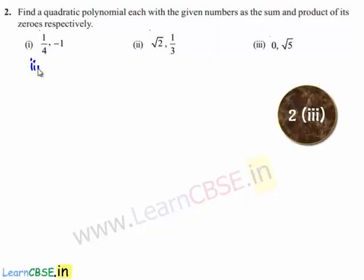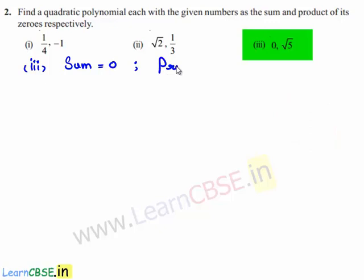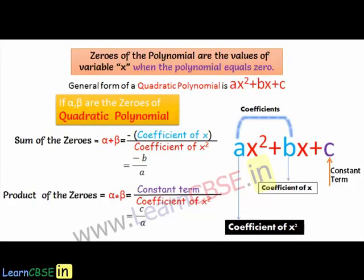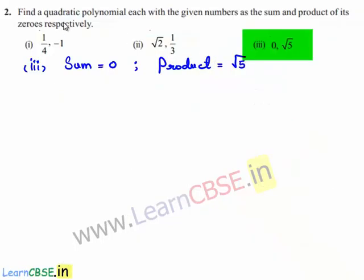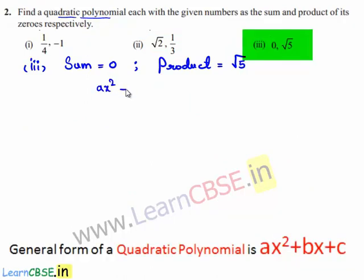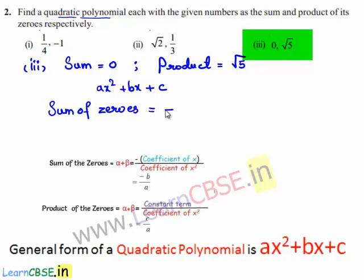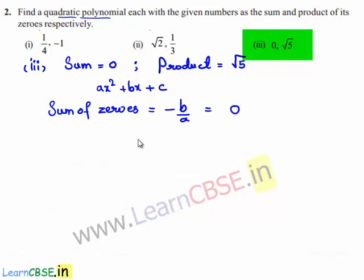Coming to the third bit, the sum of the zeros given is 0 and the product of the zeros is equal to √5. Let us assume the required quadratic polynomial to be ax² + bx + c. We know that the sum of zeros is equal to -b/a, and the given sum is 0, which can be written as 0/1. So b = 0 and a = 1.